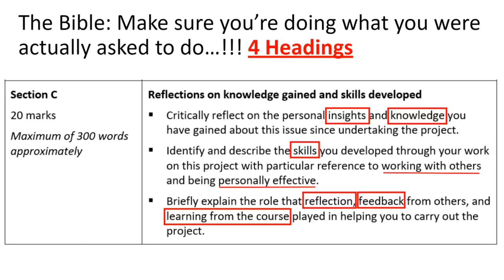We have three areas that break down into different aspects. First is knowledge and insights from the course. Second is the list of skills developed — I'd be trying to show how the skills discussed illustrate how you worked with others and how you were personally effective. That might be as simple as saying 'I was most personally effective when...' or 'I was least personally effective when...' It's something you should be aware of. The last three points in the third bullet cover reflection, feedback, and learning from the course — these are all linked because you reflect upon your feedback and connect it to the course.